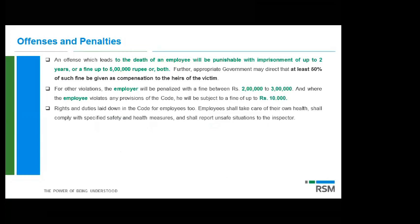Offenses and penalties under the OSH Code: an offense that leads to the death of an employee is punishable with imprisonment up to two years or a fine of five lakh rupees, or both. The central government may notify that 50 percent of the fine collected goes to the heirs of the victim. For other violations, the employer faces fines between two lakh and three lakh. Where an employee violates any provision, they are subject to a fine up to ten thousand rupees.